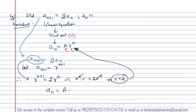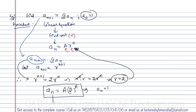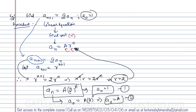With r = 2, the general solution is a(n) = A·2^n. We are given a(0) = 1. Substituting n = 0 into the solution: a(0) = A·2^0 = A·1 = A. Equating with the given value, A = 1.